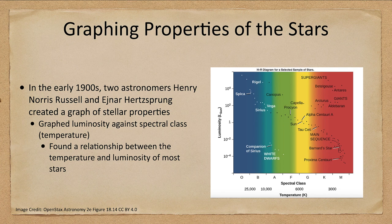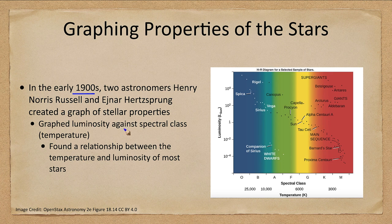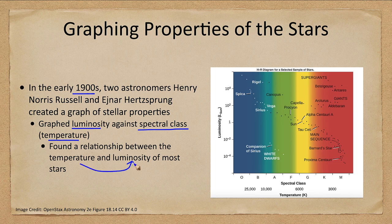This was developed in the early 1900s by Henry Norris Russell and Einar Hertzsprung, who made graphs of the properties of stars. What they looked at was the luminosity as compared to the spectral class or temperature. They found that there was a relationship between temperature and luminosity for most stars.